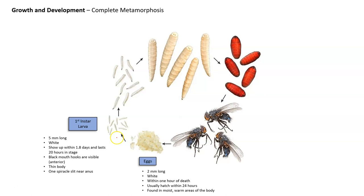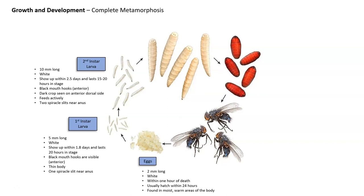The second instar larvae are roughly 10 millimeters long — double in size — still white, and show up about 2.5 days after death, lasting about 15 to 20 hours in this stage. They still have their black mouth hooks, and now a dark crop can be seen on the interior dorsal side. They feed actively and have two spherical slits near the anus, increased from one to two.